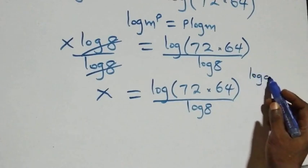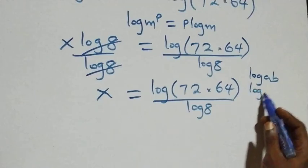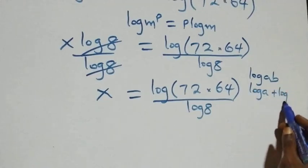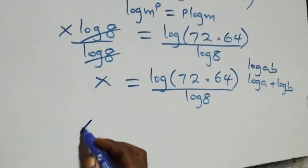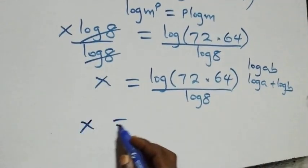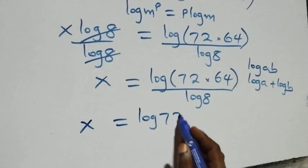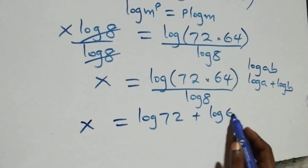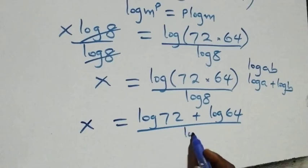This follows from the product rule of logarithms: log(a times b) equals log a plus log b. So this becomes x equals log 72 plus log 64 over log 8.